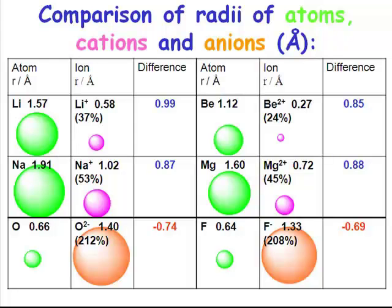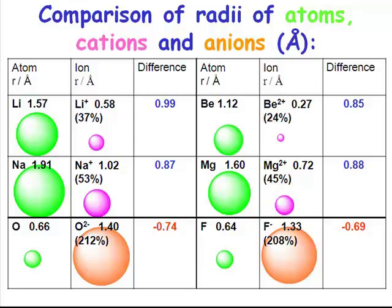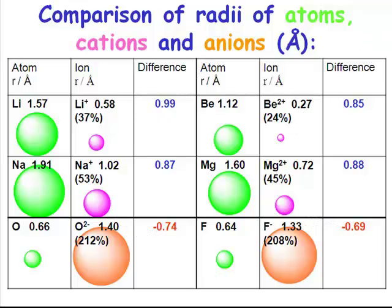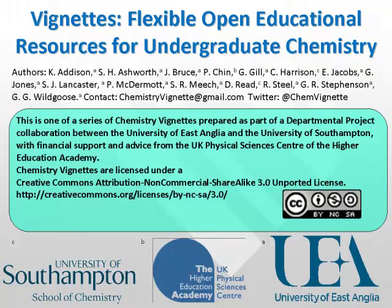Let's have a look at some ionic radii. Neutral atoms are much bigger than their cations. Why is that? Well, of course, we're removing that outermost electron. What do certain ions have in common with atomic neon? They have the same number of electrons — they are isoelectronic.